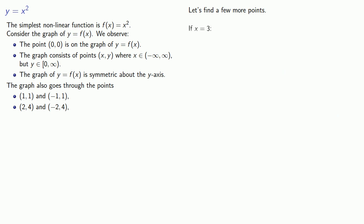Let's try x equals 3. If x equals 3, then y equals 9. So (3, 9) is a point on the graph. And by symmetry, we know that (-3, 9) is also on the graph.